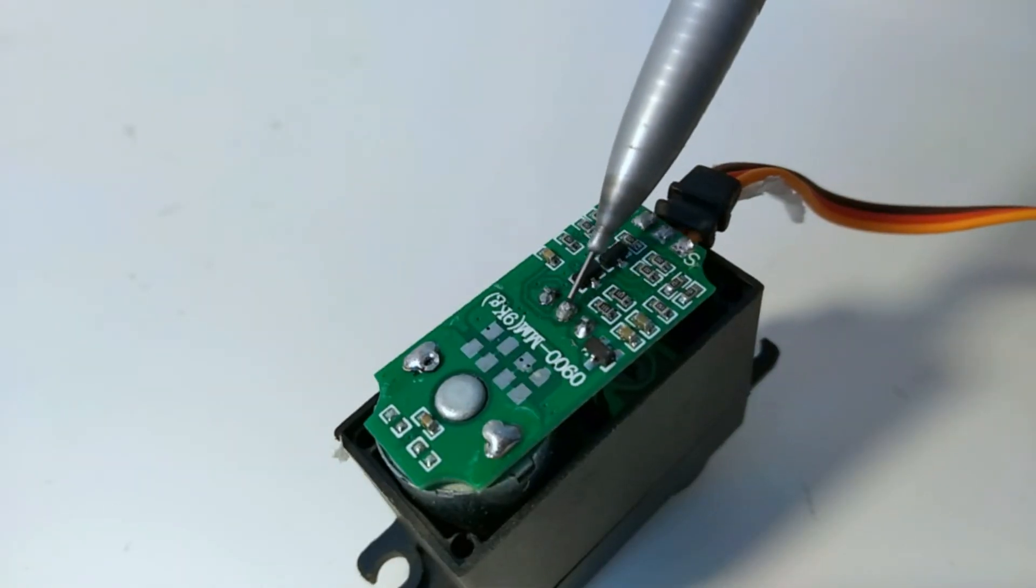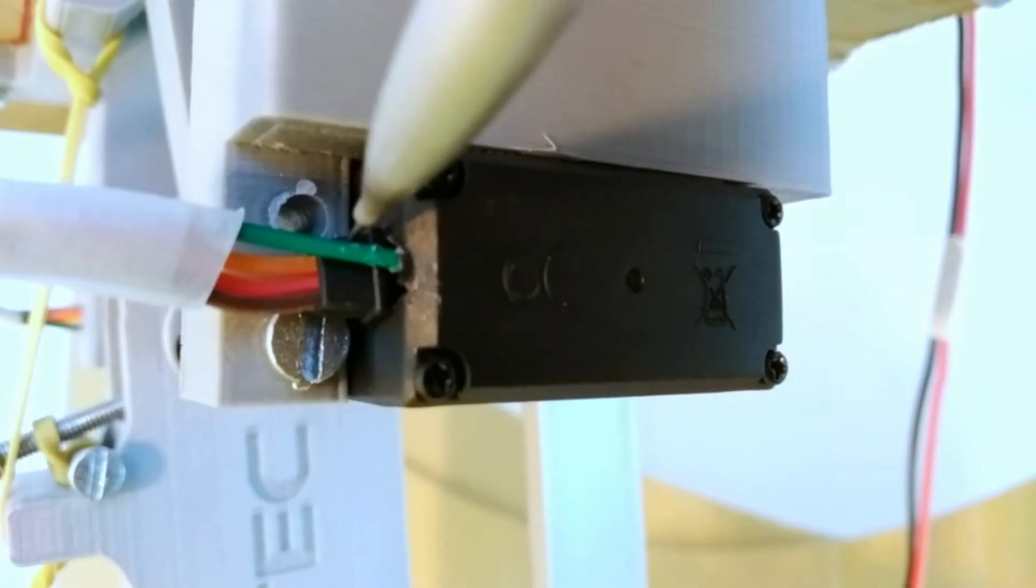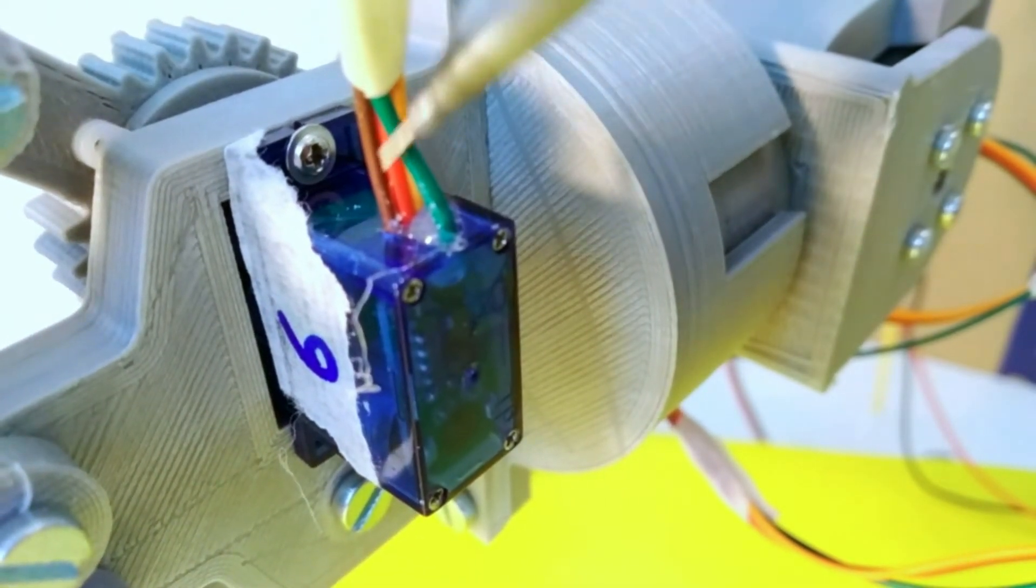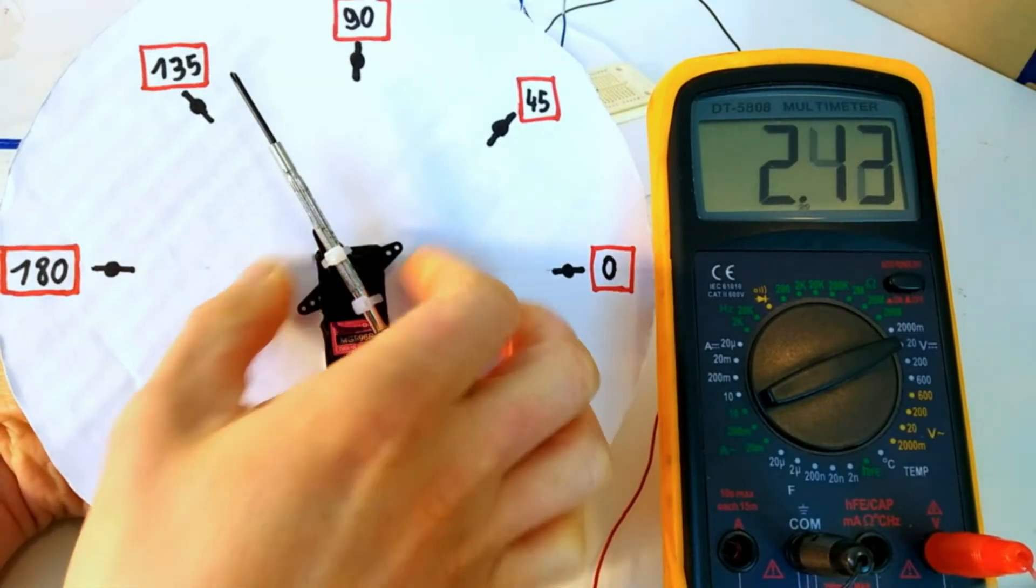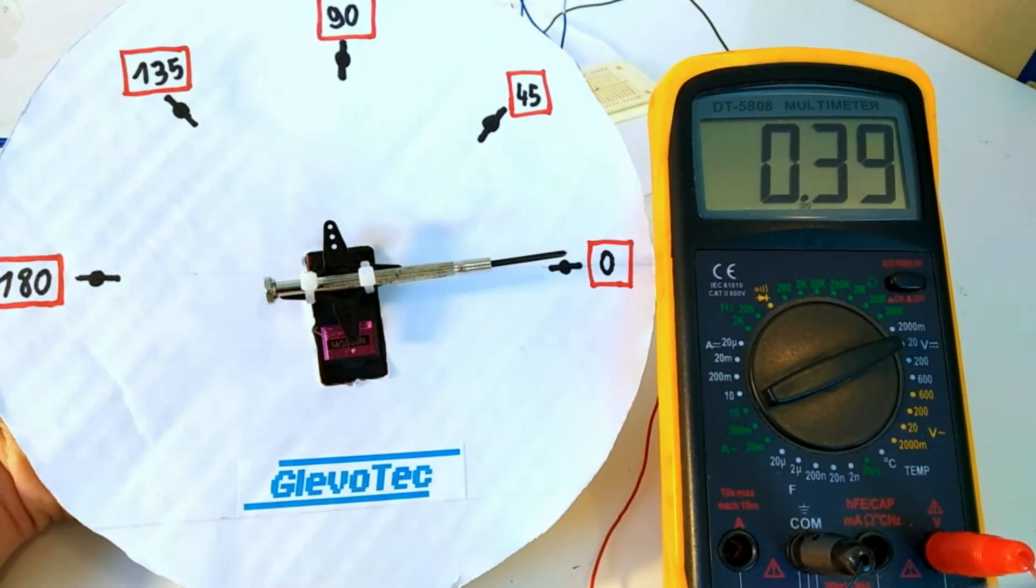All I did was simply solder one extra wire to the middle pin of the potentiometer. I did this for the large 996 servo and the smaller SG90 servo. That way we can read the voltage coming from the voltage divider corresponding with the position of the output shaft.